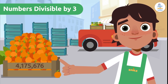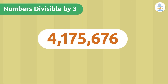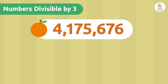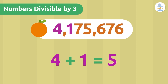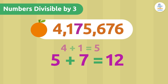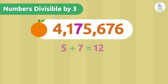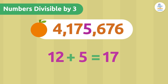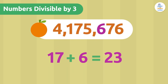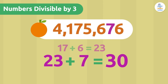There are four million, one hundred and seventy-five thousand, six hundred and seventy-six oranges to sort. That's a huge number, but that's okay — we'll do it one step at a time. 4 plus 1 is 5, 5 plus 7 is 12, 12 plus 5 is 17, 17 plus 6 is 23, 23 plus 7 is...